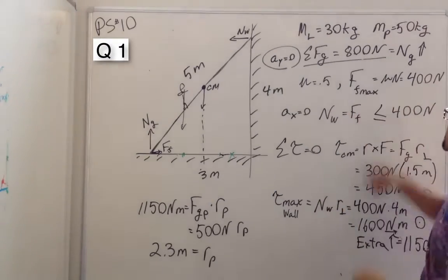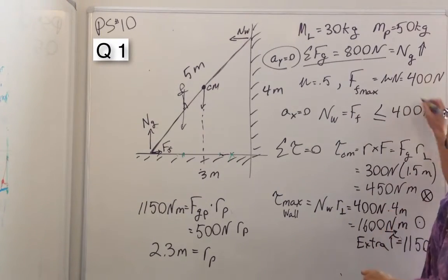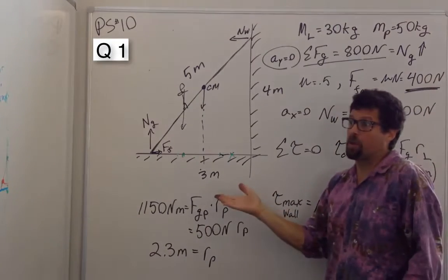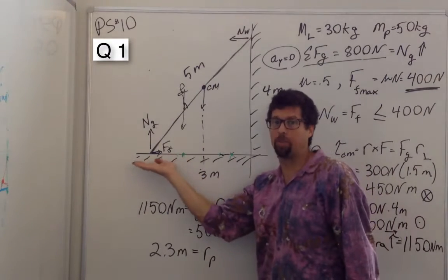Multiplying by the coefficient of friction, that gives us a frictional force of 400 newtons. Now that's not the frictional force we have, that's the maximum we can hope to get.